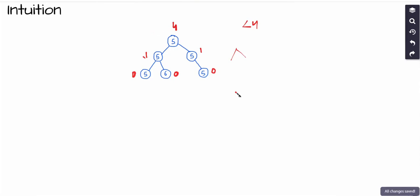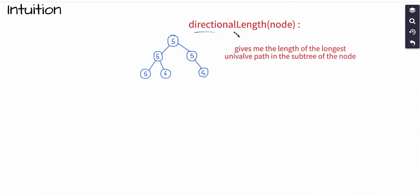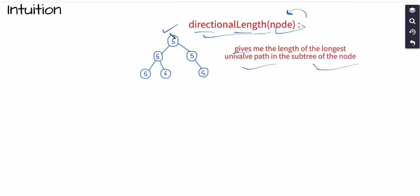This gives the intuition of a recursive solution. We define a function directional_length which takes a node and returns the length of the longest univalue path in the subtree of that node. I initially call this function for the root node, and it recursively calls itself for the left and right children — if and only if the values in the left and right child match the value of the current root node.